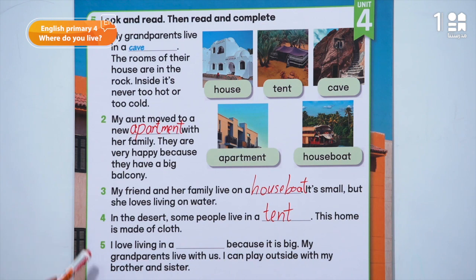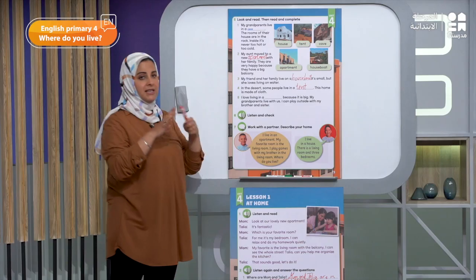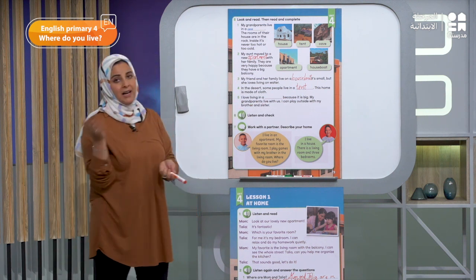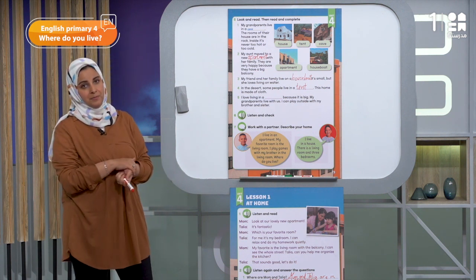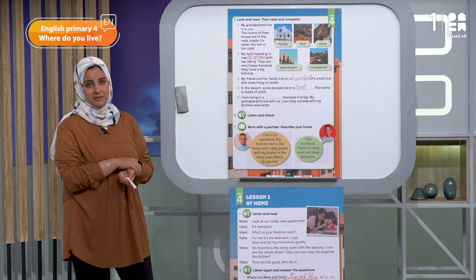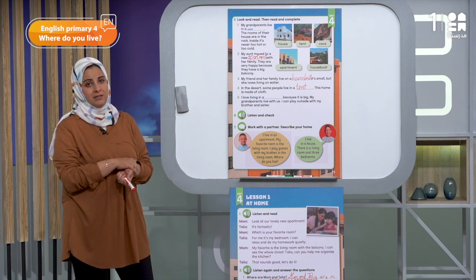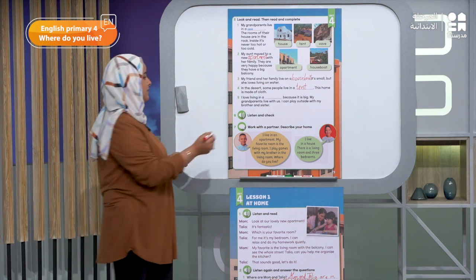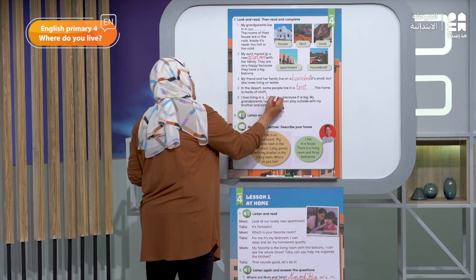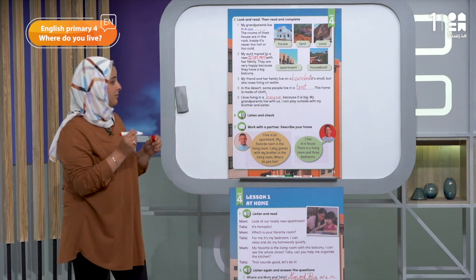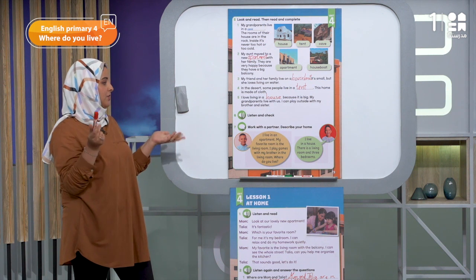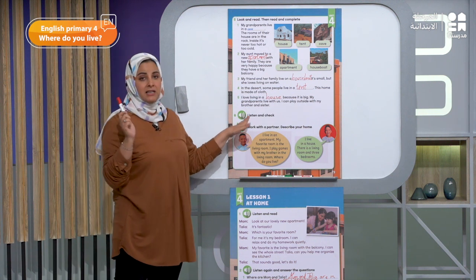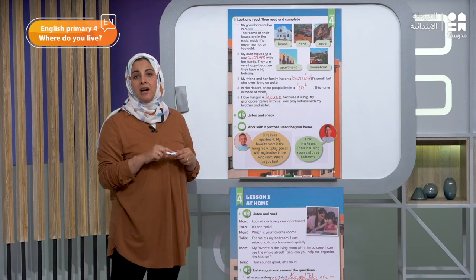Number five: I love living in a house because it is big. My grandparents live with us — I can play outside with my brother and sister. Which one is it? Very good — a house. Excellent. So I love living in a house because it is big, my grandparents live with us, I can play outside with my brother and sister. Now we will listen to the audio, exercise number six — listen and check. We will listen to this part again and check our answers.